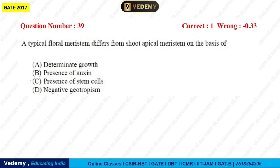Next question: A typical floral meristem differs from shoot apical meristem on the basis of which feature? Options are determinate growth, presence of oxygen, presence of stem cells, and negative geotropism. The correct answer is A — determinate growth. Floral meristem shows determinate growth, which is the basis on which it differs from shoot apical meristem.